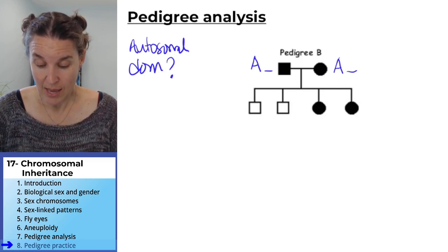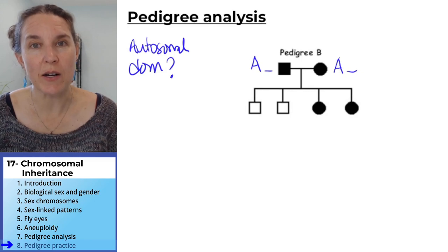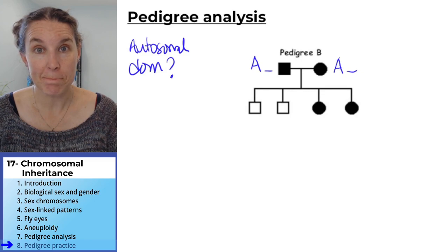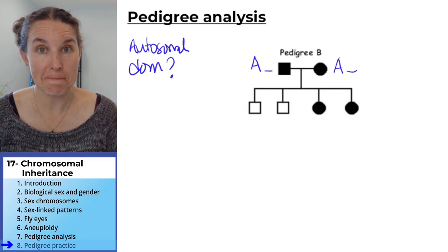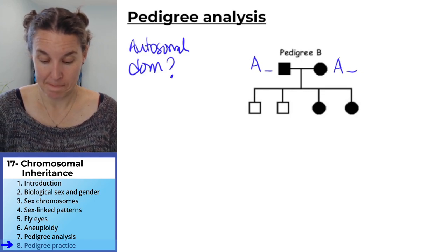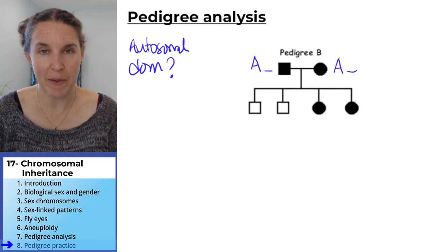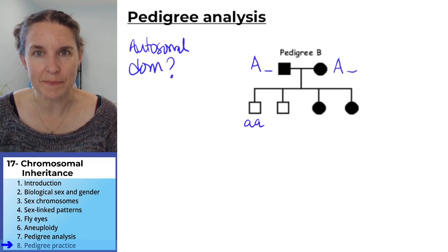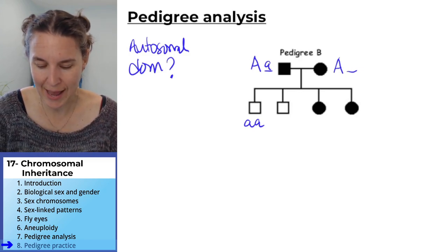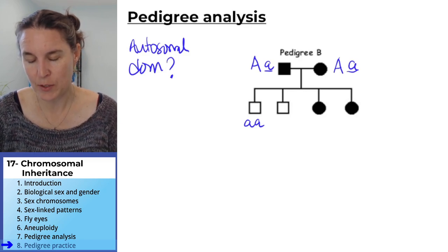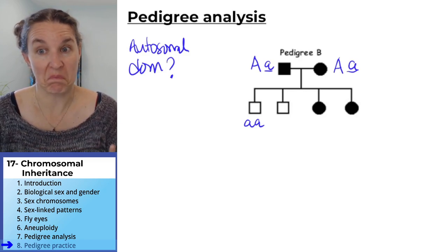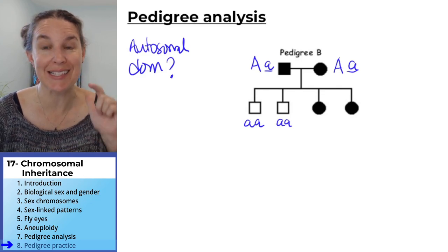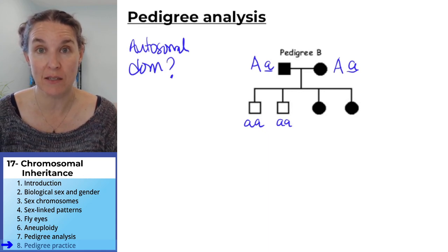Look, could both parents be homozygous dominant? Why? What's the genotype of my unaffected kids? Where did those little a's come from? One had to come from sperm parent, one had to come from egg parent. So we know that those parents have to be heterozygous if this is an autosomal dominant condition.